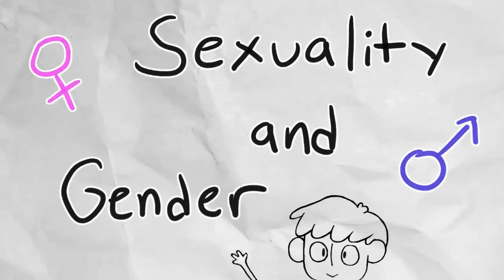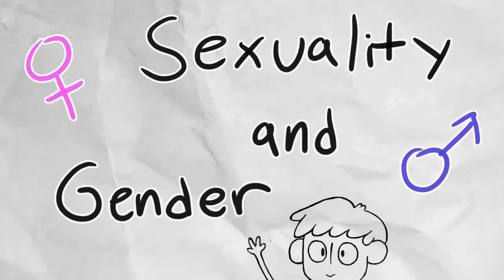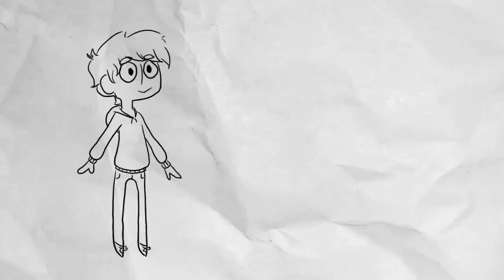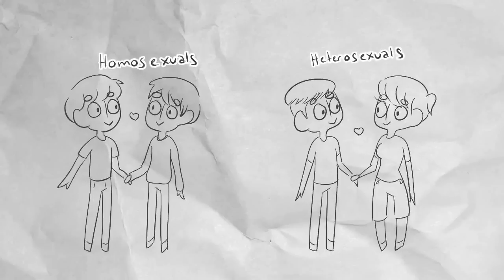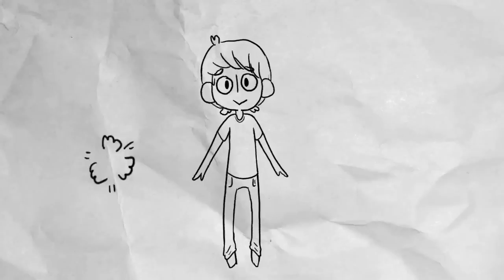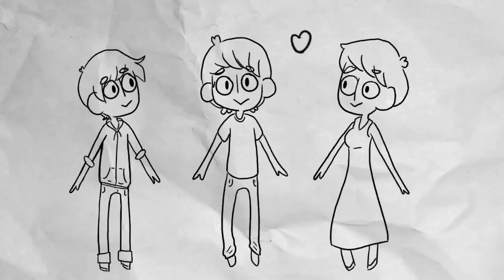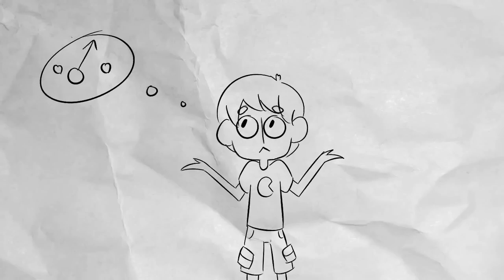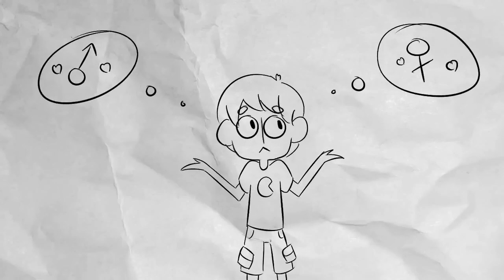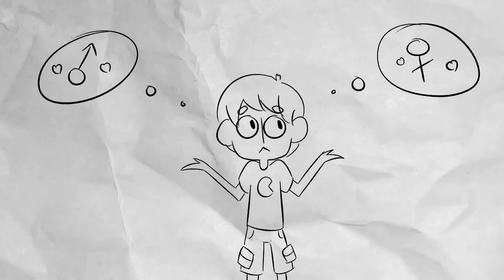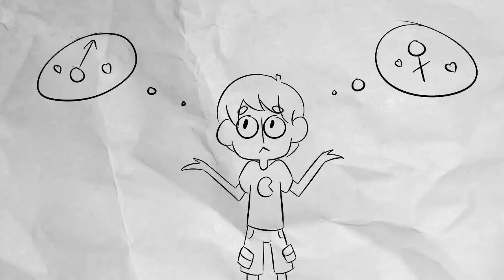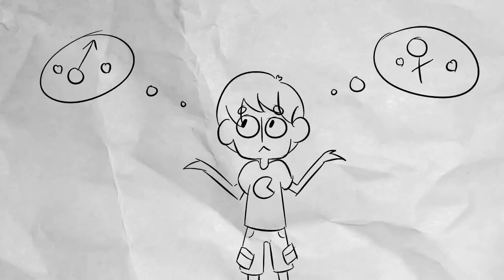Gender and sexuality is a complicated subject. The concept of males and females, homosexuals and heterosexuals, even bisexuals are common, but few people know that there's a much broader spectrum. Because of a lack of information, many teens have a hard time figuring out their sexual and gender identity. Without a proper education, they can struggle with their identity well into adulthood and even their whole life.